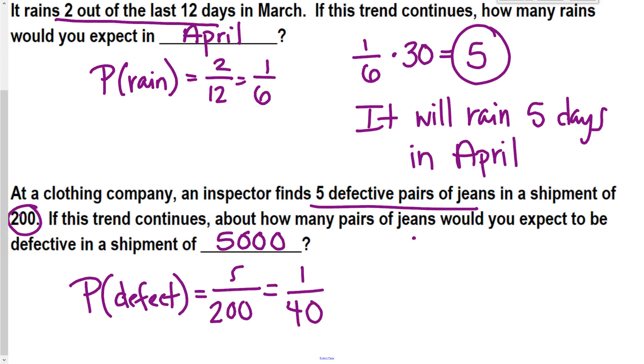So again, same thing I just did above. I'm going to take 1 over 40, and I'm going to times it by my new shipment amount, because I know 1 out of every 40 jeans is going to be defective. So that means in a shipment of 5,000, I would see 125 pairs of jeans that was defective.